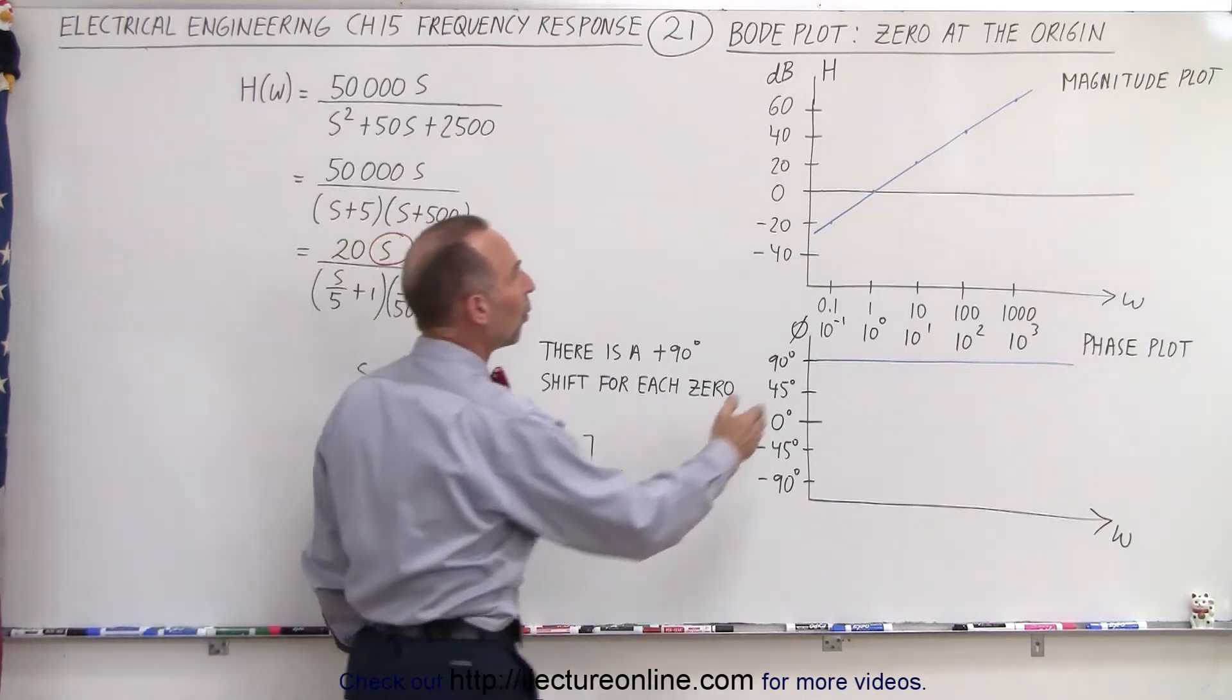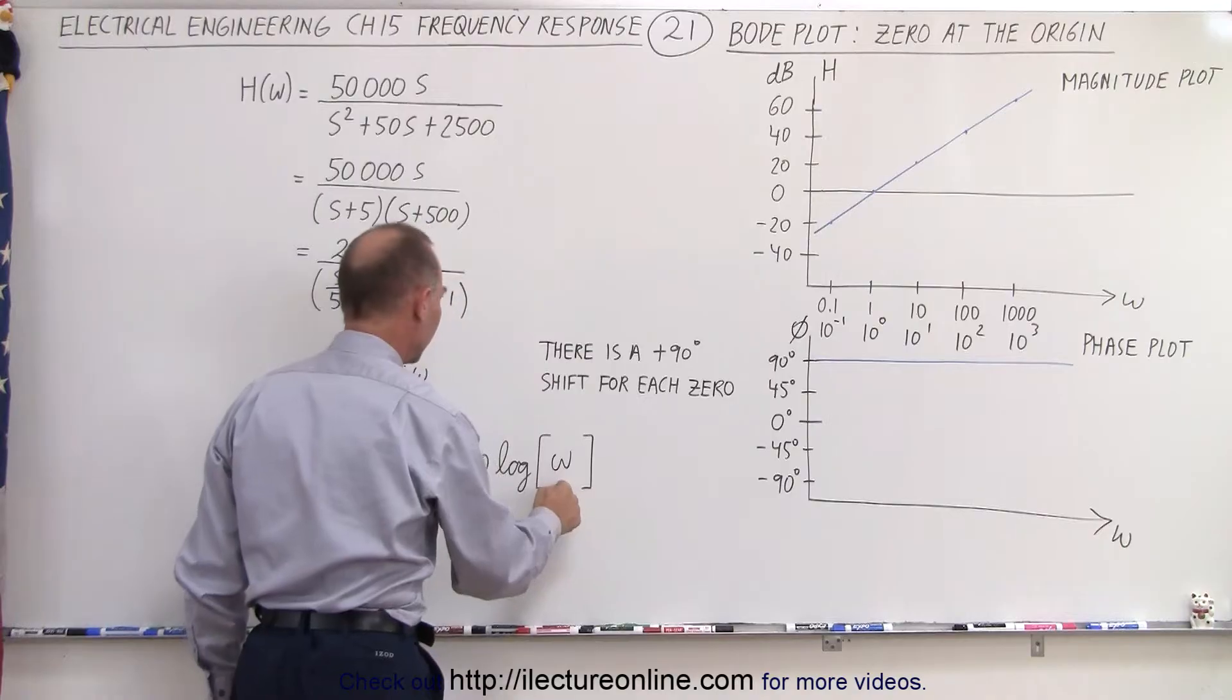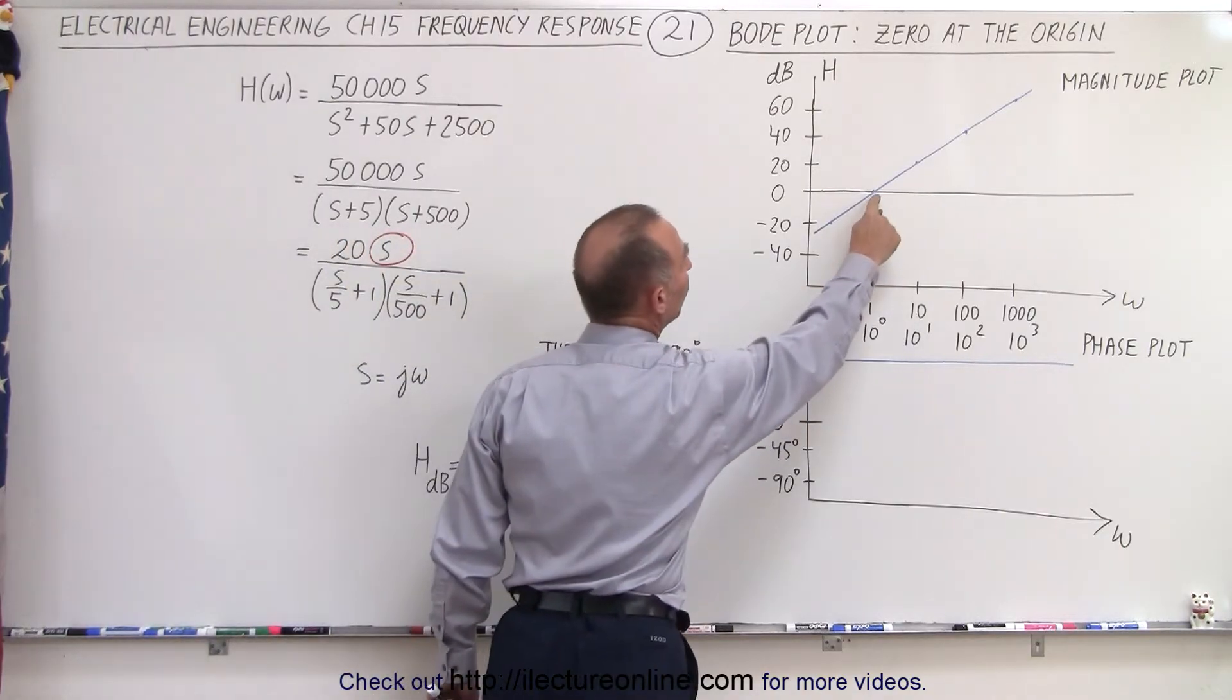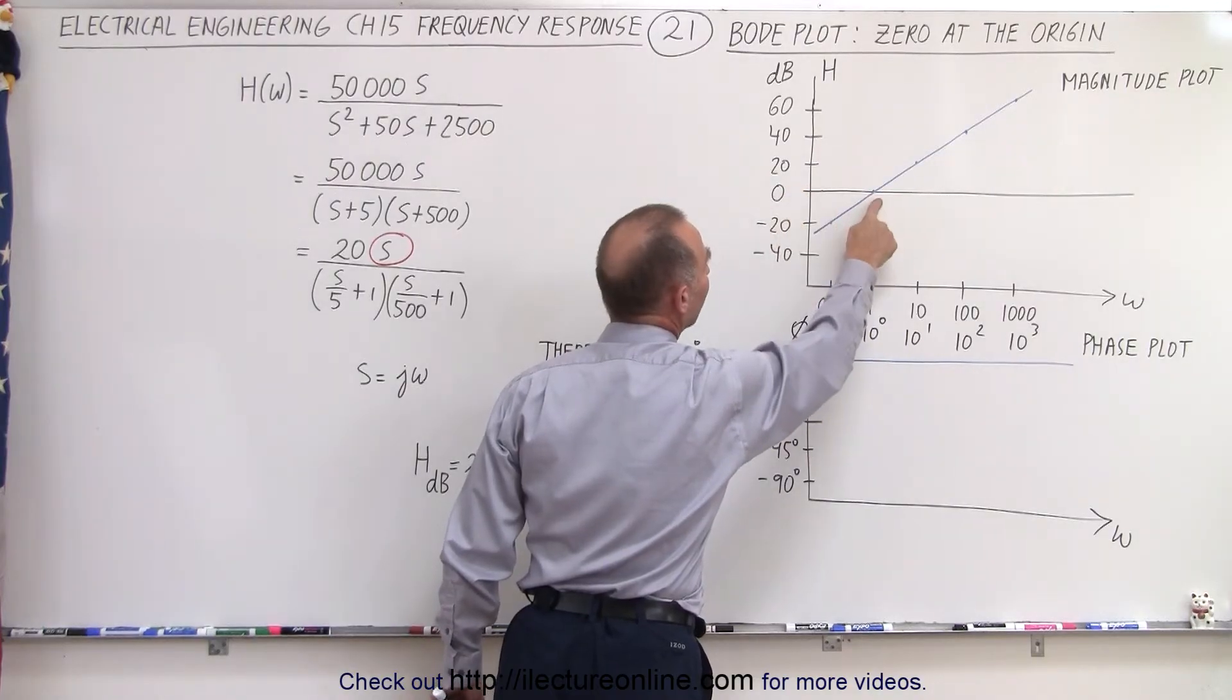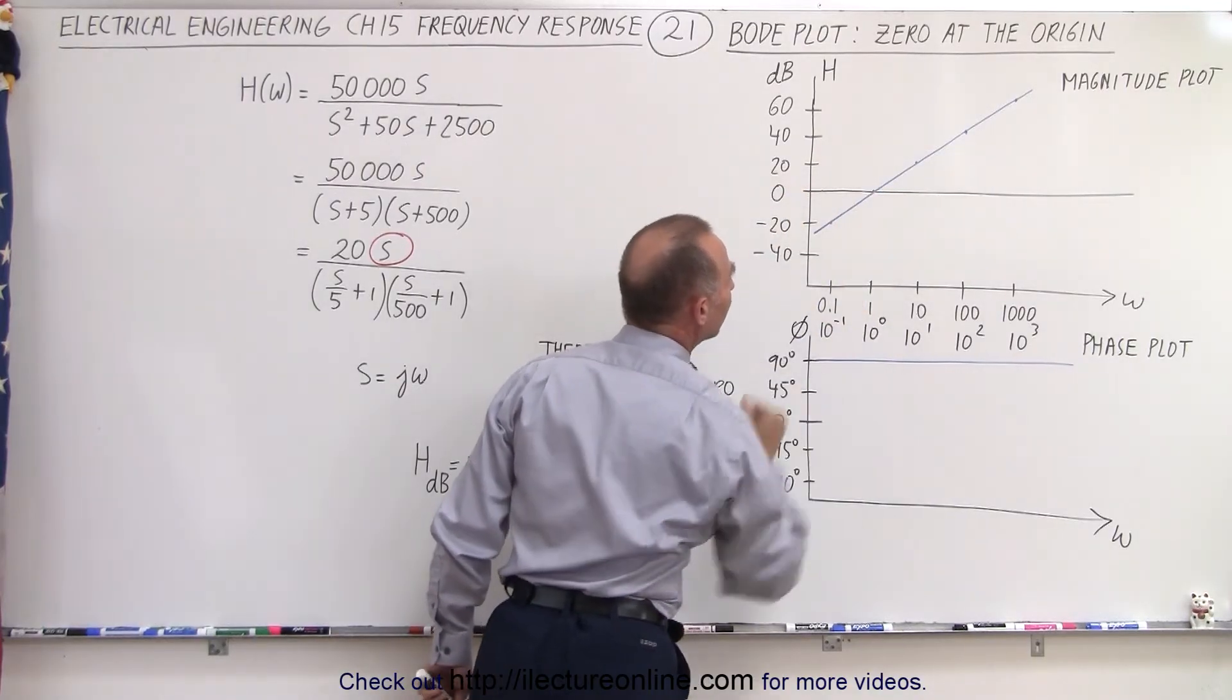Now when omega is equal to 1 the log of omega is 0 so the magnitude in dB will be 0 so the plot crosses over the 0 dB line at the omega being equal to 1.